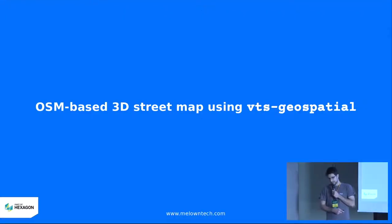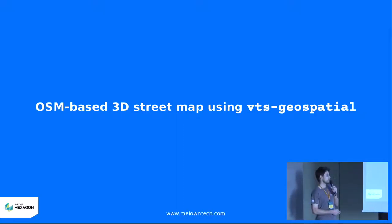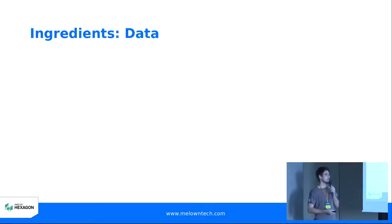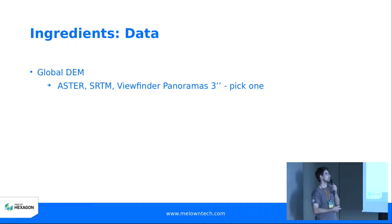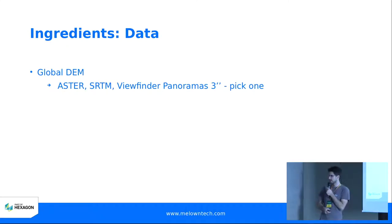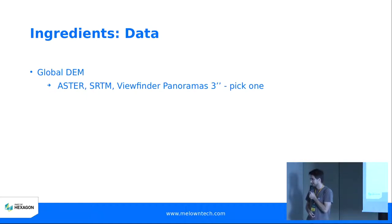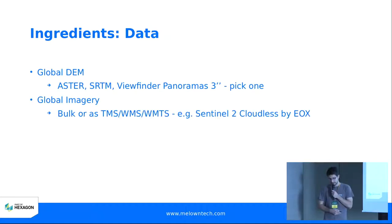So how to set up an OSM-based 3D street map using VTS Geospatial? We have two basic ingredients: data and software. For the data we will need a global DEM — either ASTER or SRTM type. We picked the Viewfinder Panoramas, which is the most global and most complete dataset, crafted by Jonathan de Ferranti, a British geographer. He did a hell of a job — it's a very nice dataset.